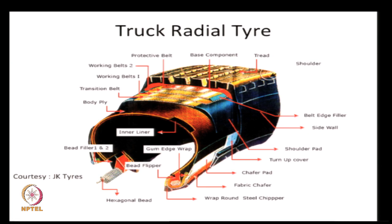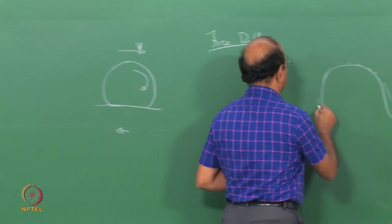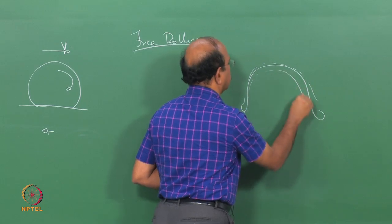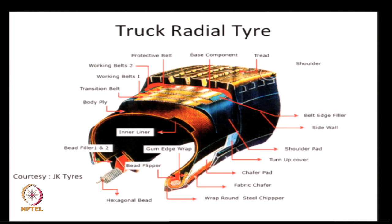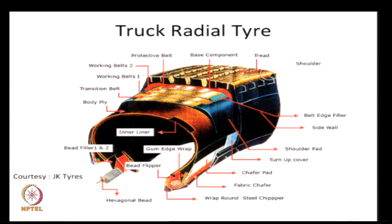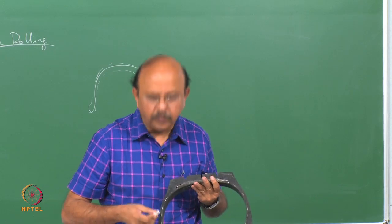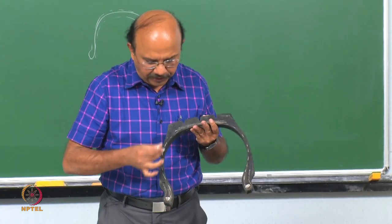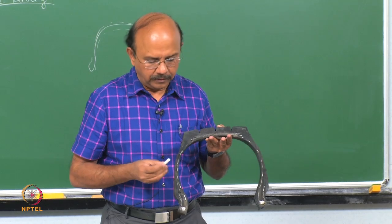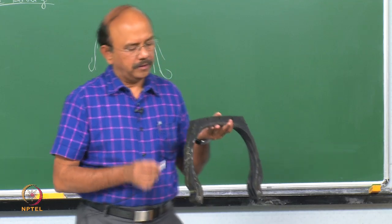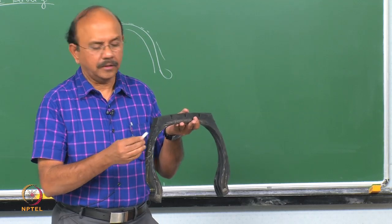Outside the body ply, you can see what is called as the side wall. In between, there are some components — there is a steel reinforcement protected on either side by rubber, and the outside is the side wall. This region of the tyre is what you call as the buttress. The steel reinforcements go all the way and then wrap around what is called as the bead or bead core. The reinforcement wraps around the bead and comes out in the other direction.